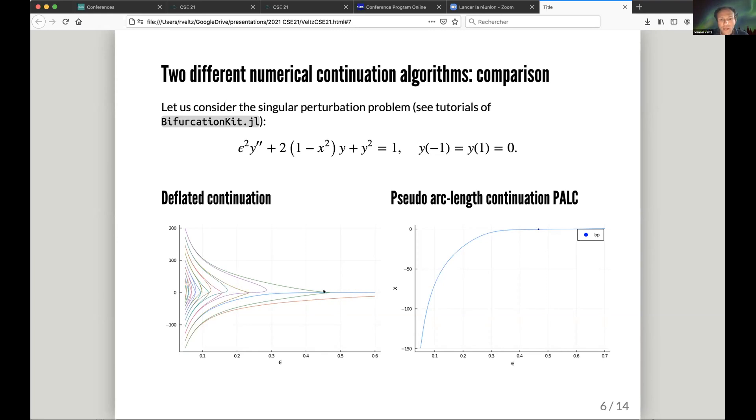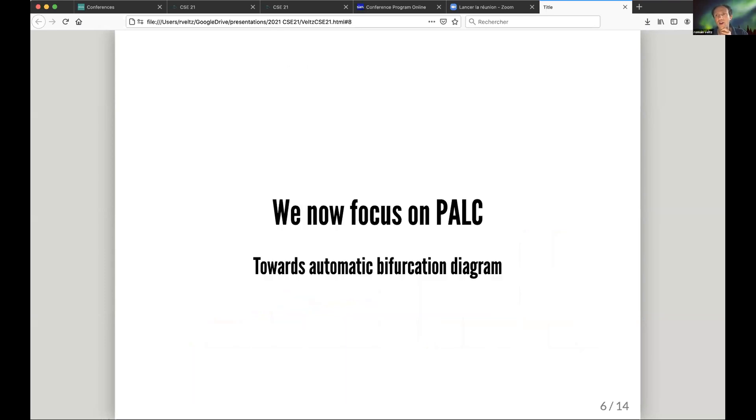We can branch from this point and find the emerging branches, which would be basically the green one. So at best, using PALC and automatic branching, we can get on this graph the blue graph and the green graph. So there's a trade-off between memory, speed, and what you want to do. We shall now focus on PALC, the pseudo arc-length continuation, and I'm going to present how we can use it to do automatic bifurcation diagram computation of the largest connected components.